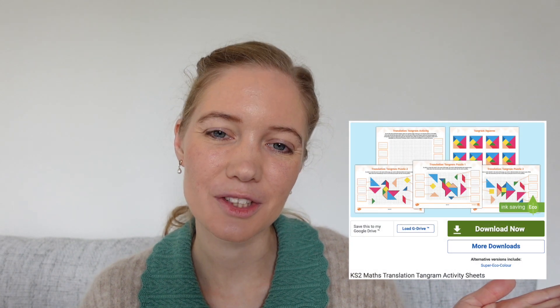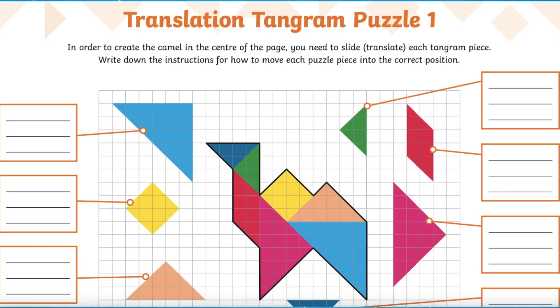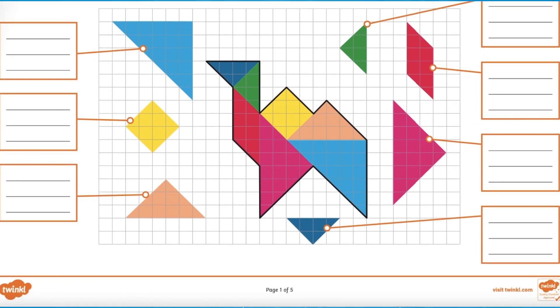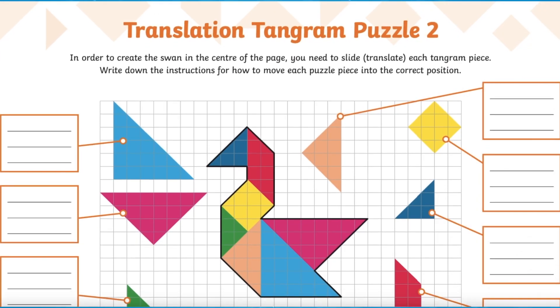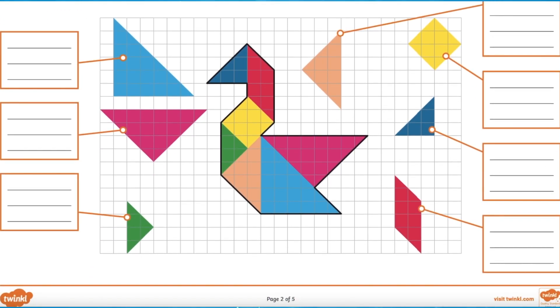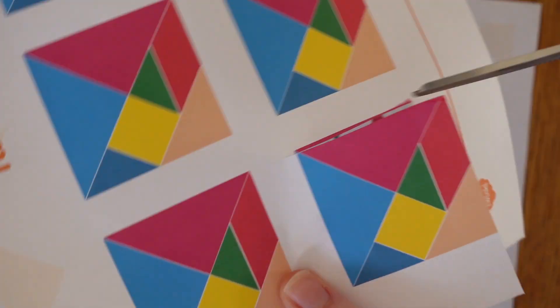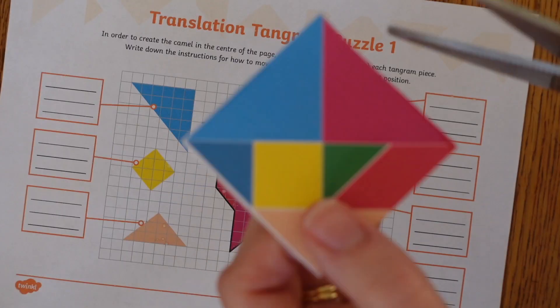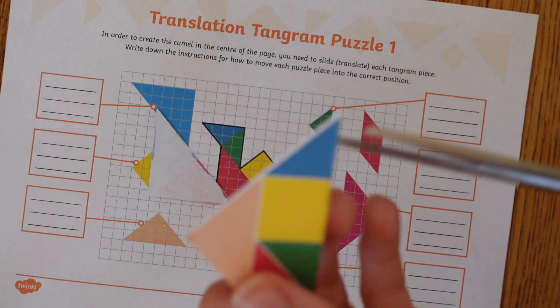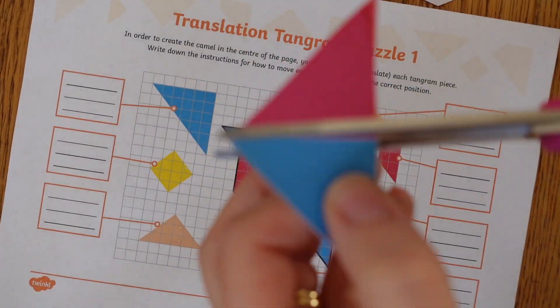The best way for children to learn about translation is with fun, practical activities like these wonderful translation tangram activity sheets. Each sheet features a tangram animal at its center with the pieces which created that animal around the edges. Children can cut out the tangram squares themselves and manipulate them on paper to help them count how far the piece was translated right or left and up or down to reach its final location.